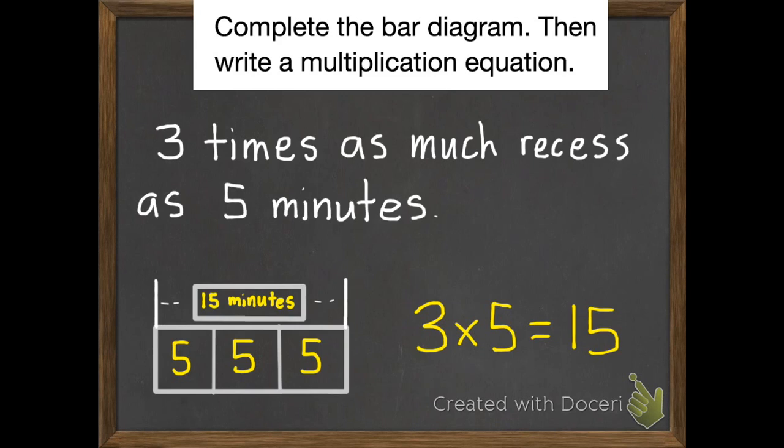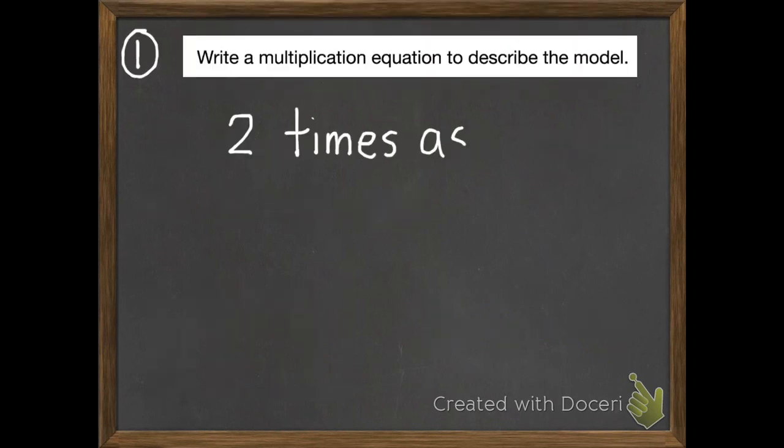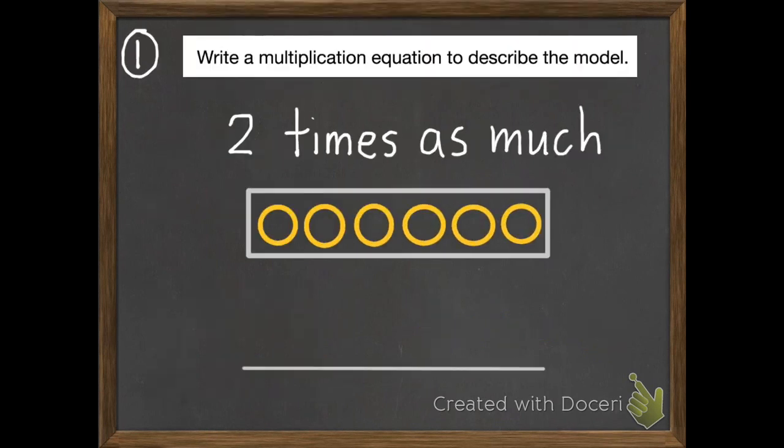Okay, if you got those, you're ready for the two problems you'll bring to class. Number one. Write a multiplication equation to describe the model: two times as much as the circles you see in that box.